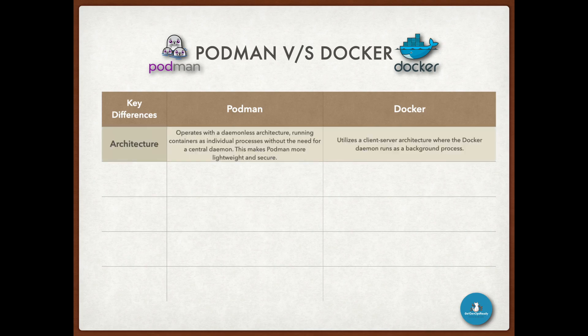Podman operates with a daemonless architecture, running containers as individual processes without the need for a central daemon. This makes Podman more lightweight and secure. Docker utilizes a client-server architecture where the Docker daemon runs as a background process.